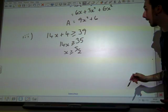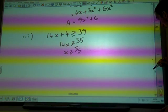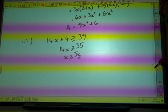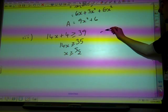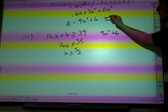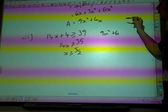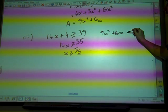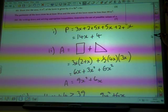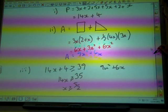The other thing that we've been given here is that the area has to be less than 99. So our area formula there, 9X squared plus 6X, has to be less than 99.